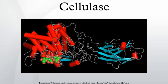Aside from ruminants, most animals do not produce cellulase in their bodies and can only partially break down cellulose through fermentation, limiting their ability to use energy in fibrous plant material.